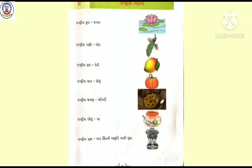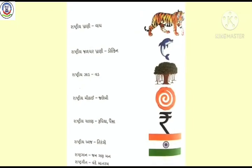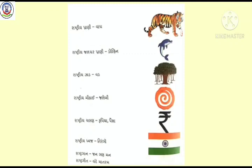બાળકો, આ ચિત્ર બધા વિશે સમજ્યા. 'રાષ્ટ્રીય ચિહ્નો' - બધા દેશના અલગ અલગ ચિહ્નો હોય છે, અને બધા દેશના 'રાષ્ટ્રીય ચિહ્નો' છે. જે આપણા ભારત દેશમાં - ફૂલ (Lotus), પક્ષી (Peacock), કેરી (Mango) - આ આપણા 'રાષ્ટ્રીય ચિહ્નો' છે. આ બધાને આપણે જોઈ લીધા - બાળકો, બાકીનો પાઠ આપણે Next Video માં લઈશું.